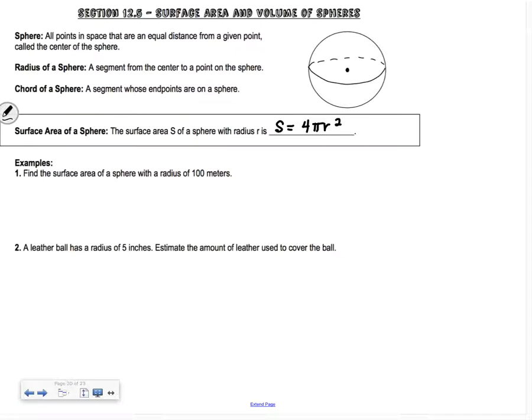It says find the surface area of a sphere with a radius of 100 meters. So if our radius is 100, our surface area is 4π times 100 squared. 100 squared is 10,000, so times 4, we get 40,000π. Our units are meters squared because it's an area.